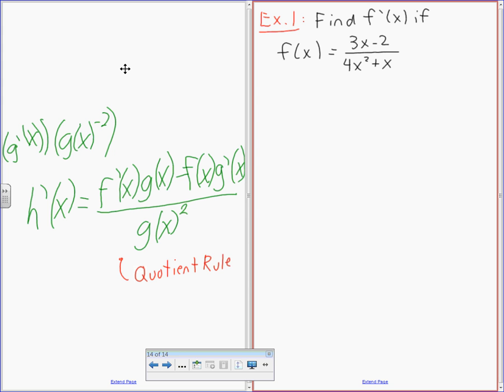Okay, so in order to get f prime of x, we're going to have the derivative of the numerator times the denominator. Tyler, what's the derivative of the numerator, please? Just 3. Just 3, good. All right, so the top left is just going to be 3 times 4x squared plus x. So this is what Michael was saying, f prime of x, that's the numerator, right? The derivative of the numerator times the denominator.